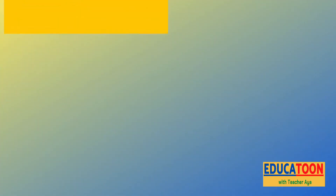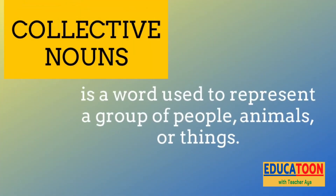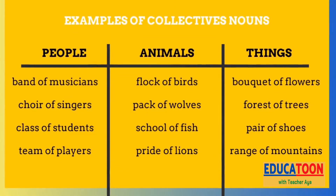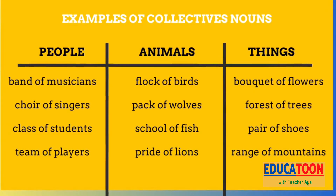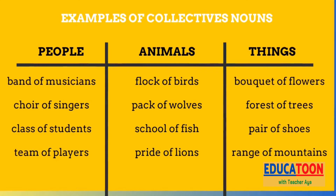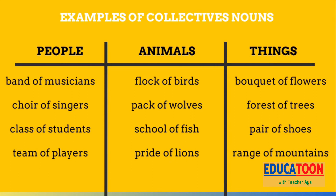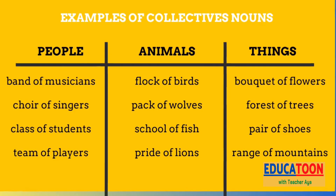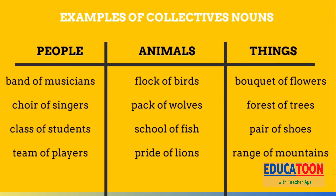Let us talk about collective nouns. A collective noun is a word used to represent a group of people, animals, or things. There are lots of collective nouns. Examples for a group of people: band of musicians, choir of singers, class of students, and team of players. For animals: flock of birds, pack of wolves, school of fish, and pride of lions. For things: bouquet of flowers, forest of trees, pair of shoes, and range of mountains.